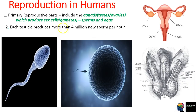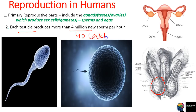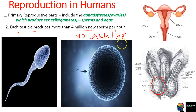Here is an interesting fact: one testicle produces 4 million (40 lakh) sperms per hour. So one testicle produces 40 lakh sperms in a single hour.